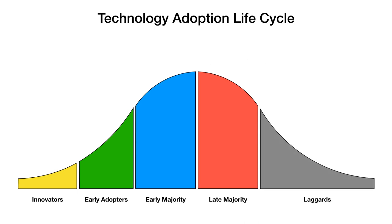Then we have the last group, which is the laggards. These are the ones that are really skeptical — they really don't want to change their way of doing things. The typewriter works just fine, thank you very much; I don't need a computer. There are people like that who just don't want to adopt new technology and are skeptical of the impact it can really have on their lives.